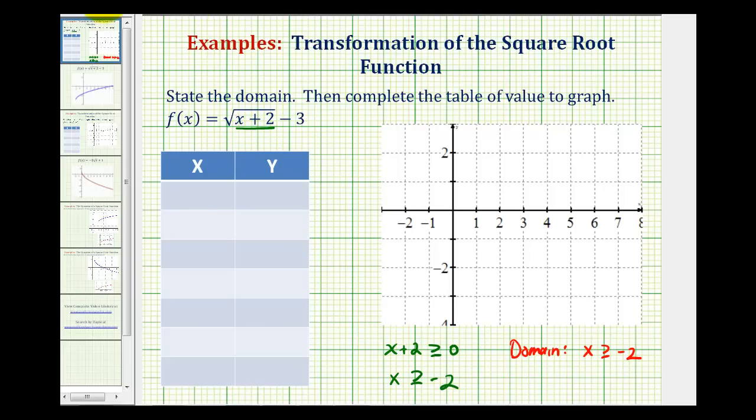So notice if we select x equals negative 2, we'd have the square root of 0, that's good. If we want this to be 1, x would have to be negative 1, since negative 1 plus 2 is 1. If we want this to be the square root of 4, x would have to be 2. If we want this to be the square root of 9, x would have to be 7.